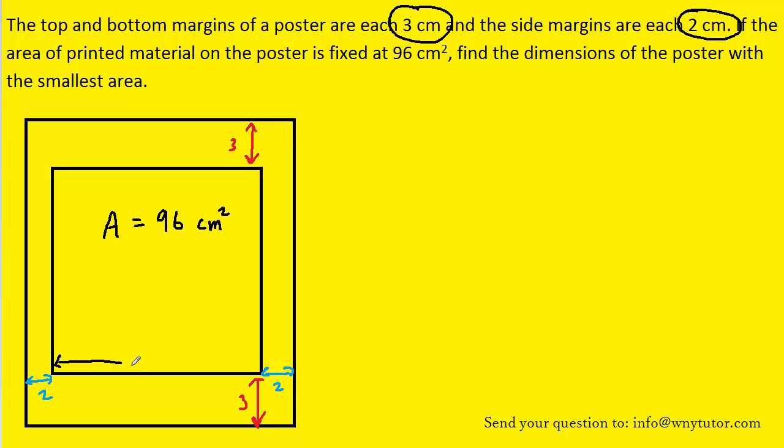If we label the width of the printed material as x and the length of the printed material as y, and we remember that the area of a rectangle is the width times the length, we could say that xy is equal to 96, and that will be the first of two equations that we're going to need for this problem.